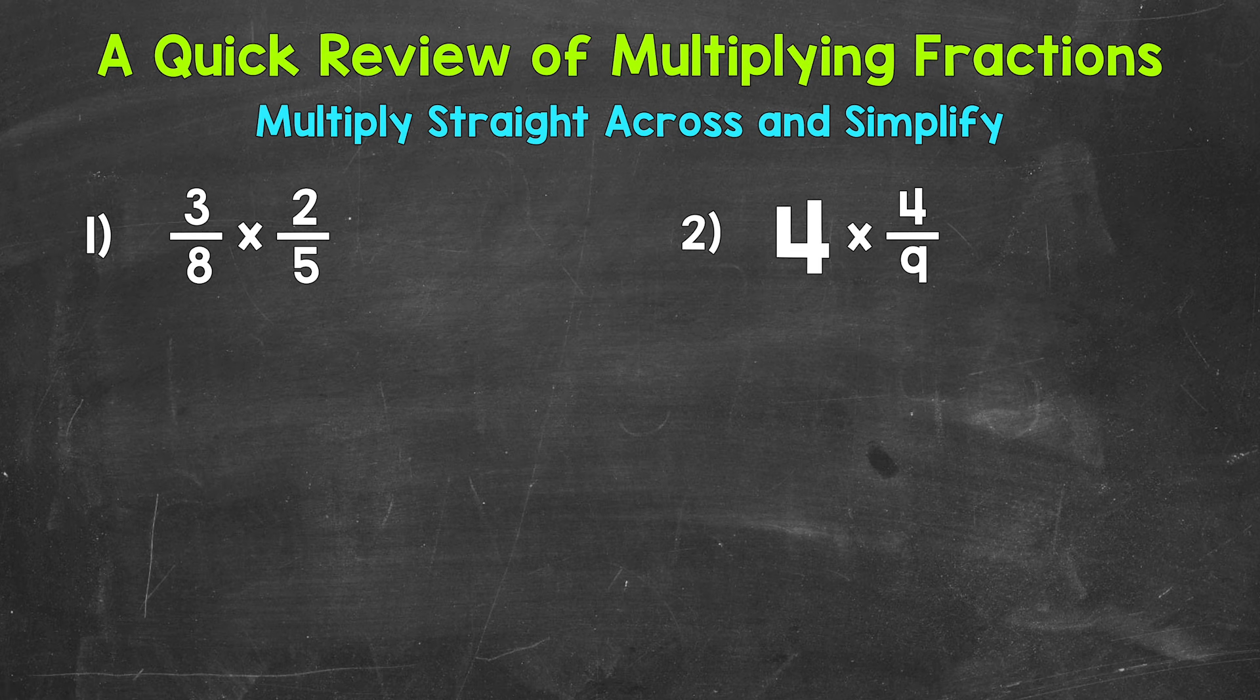Let's multiply our numerators first. So, 3 times 2, that gives us 6, and then 8 times 5, that gives us 40. So, we get 6 fortieths. Now, 6 fortieths is our answer, but we can simplify here.